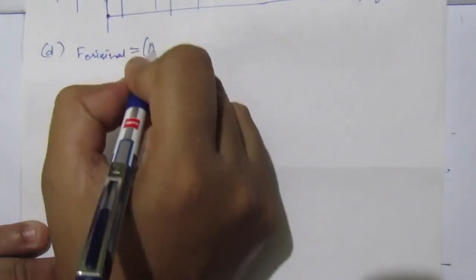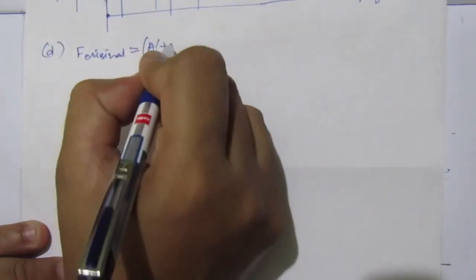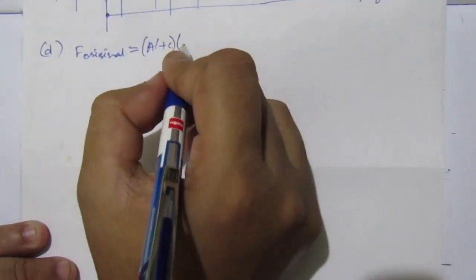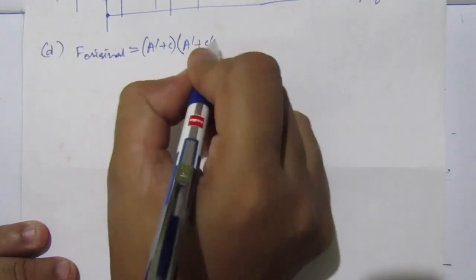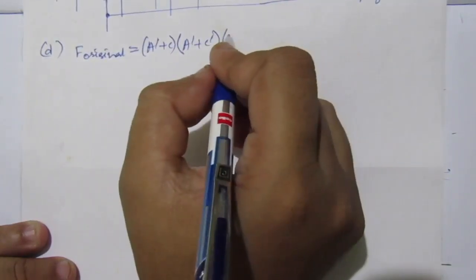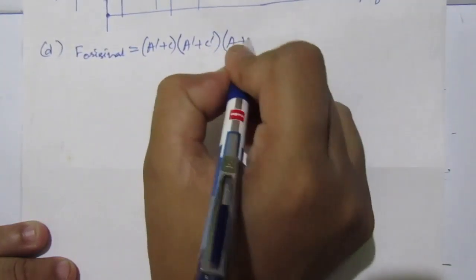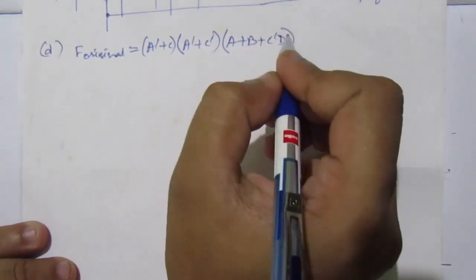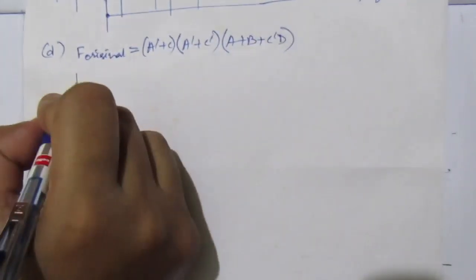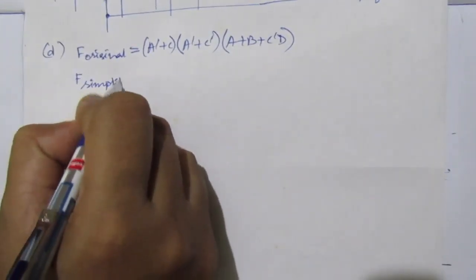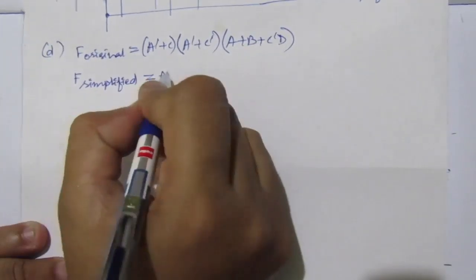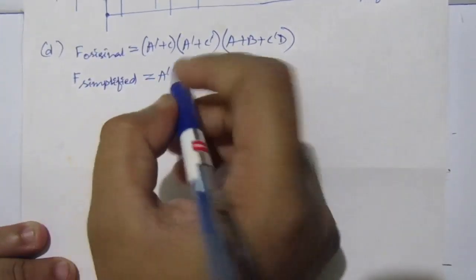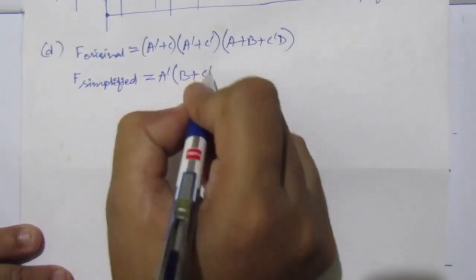For part d, f original equals (ā + c)·(ā + c̄)·(a + b + c·d). And f simplified equals ā·(b + c̄·d). We have four input variables a, b, c, and d.